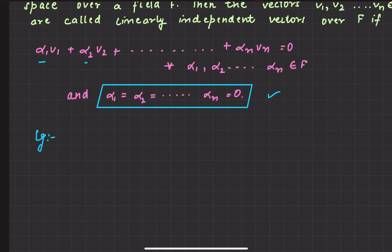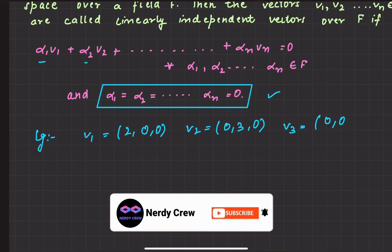I will take a very simple example. I will say v1 is (2,0,0), v2 is (0,3,0), and v3 is (0,0,-4).